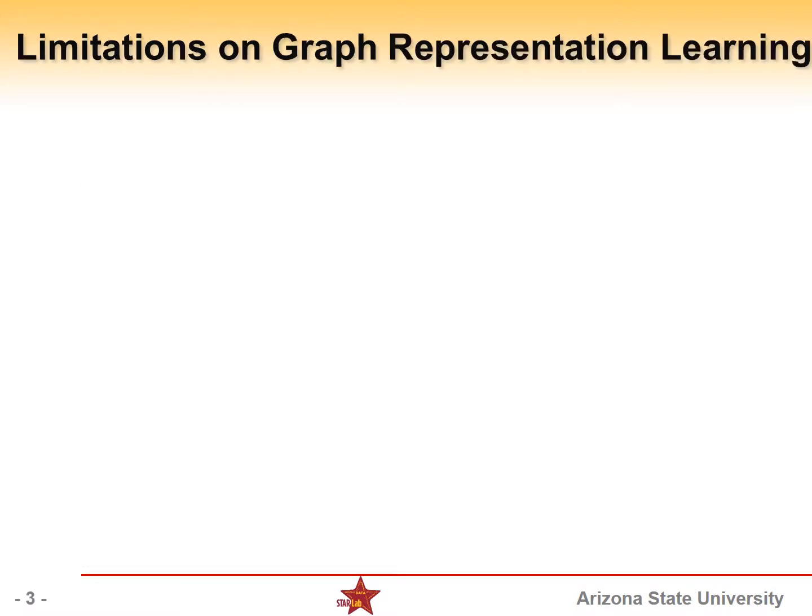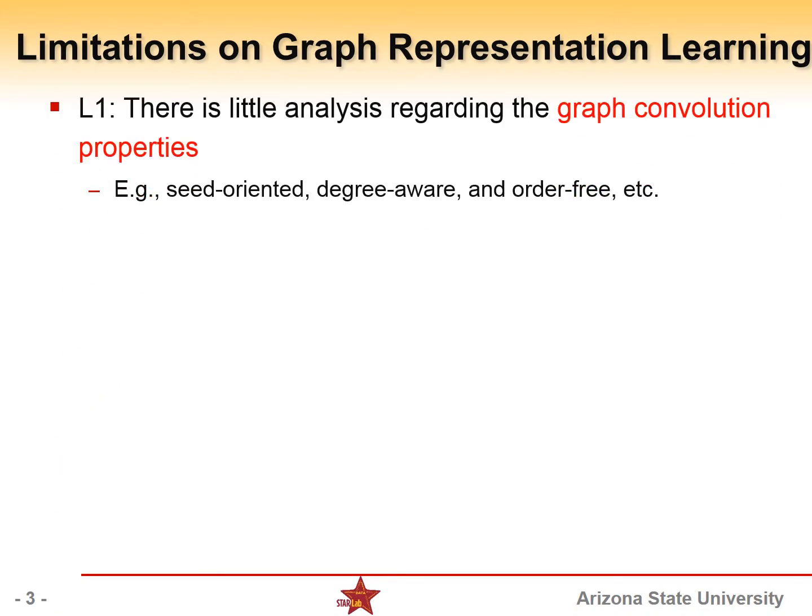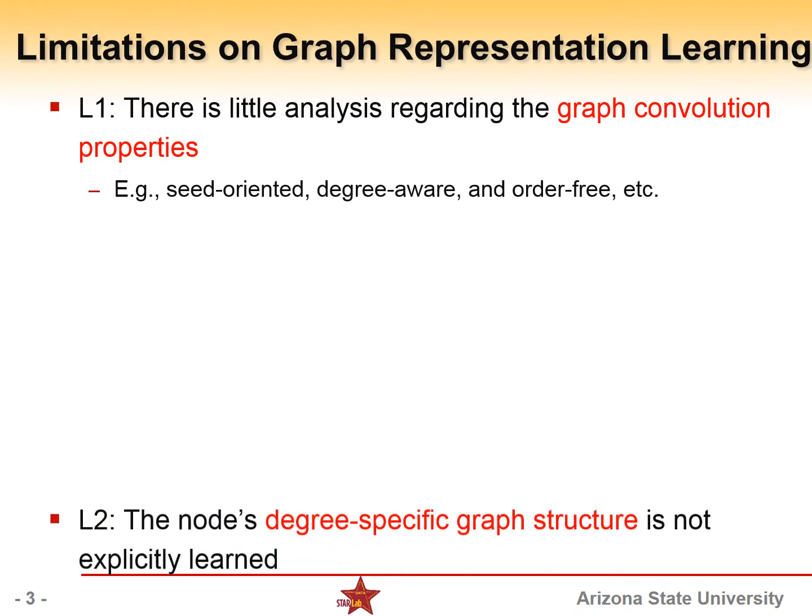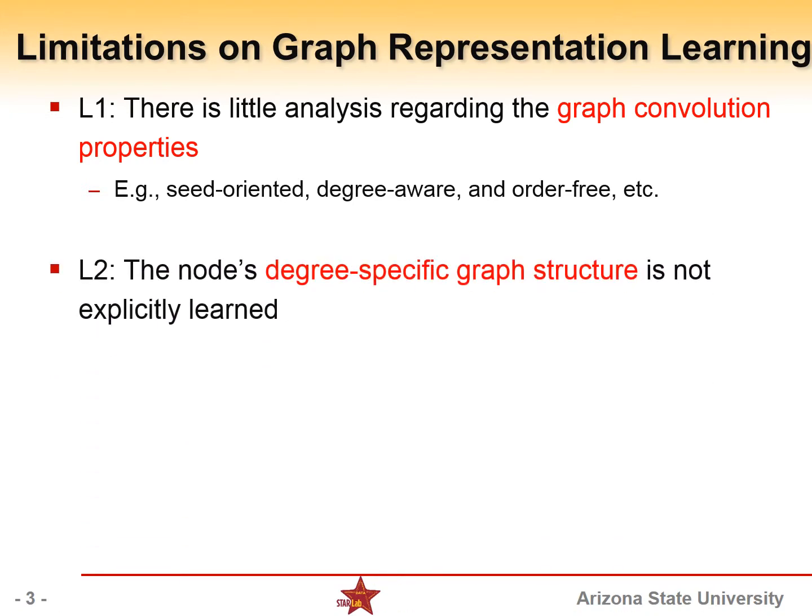We found that there are some limitations in the existing graph representation learning methods. First, there is little analysis regarding the graph convolution properties when designing the model. Second, the degree-specific graph structure is not explicitly learned, later we will explain why this property is important.